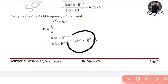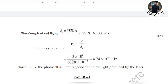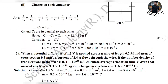For the red light from a He-Ne laser, wavelength = 6328 Å = 6328×10⁻¹⁰ m. Frequency of red light vr = c/λr = 3×10⁸ / 6328×10⁻¹⁰ = 4.71×10¹⁴ Hz. Since the threshold frequency v₀ > vr, the photocell will not respond to the red light produced by the laser. That is the statement you are supposed to write.